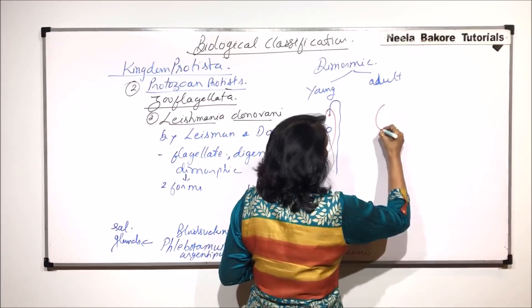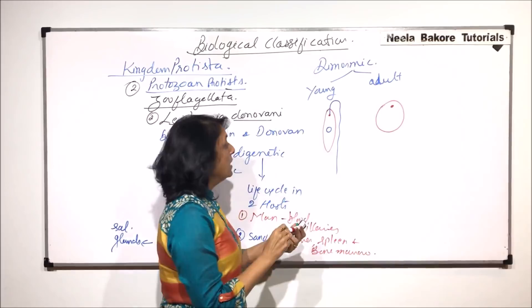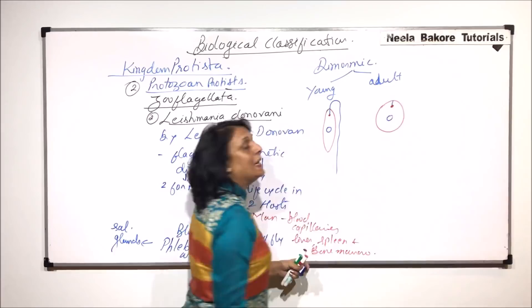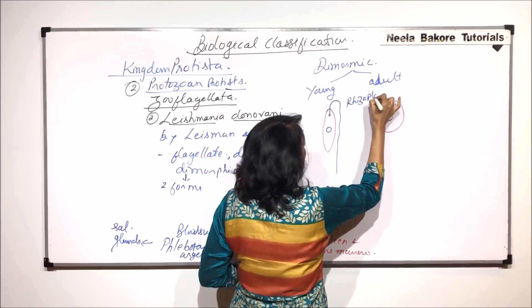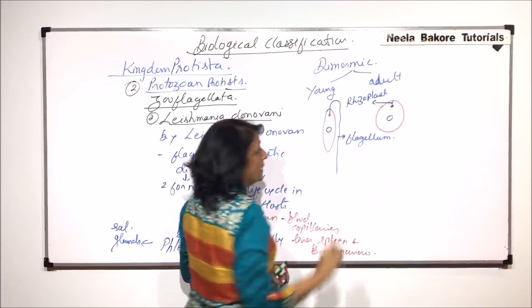The adult is oval or slightly roundish. Basal granule is there. Nucleus is also present. And the flagellum is only internal. So there is no external flagellum. This internal flagellum is known as rhizoplast, and this is the regular flagellum.